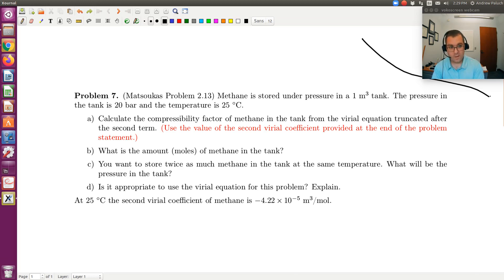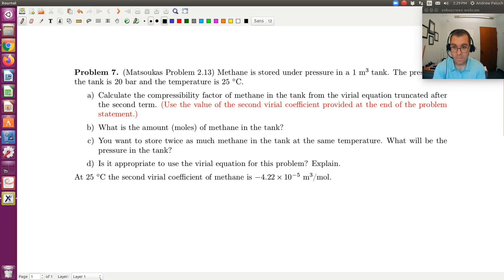So let's look at part A. Part A says calculate the compressibility factor of methane in the tank from the virial equation truncated after the second term. So our virial equation is going to take the form of Z is equal to 1 plus BP over RT.